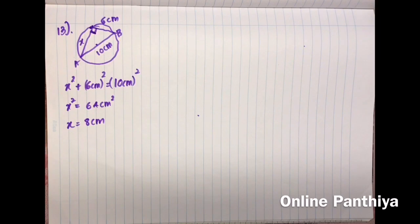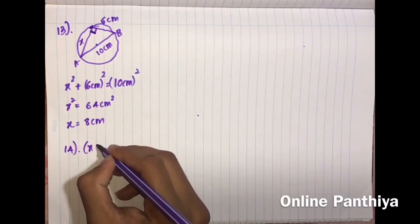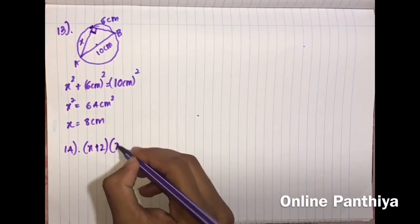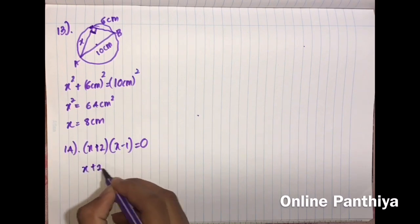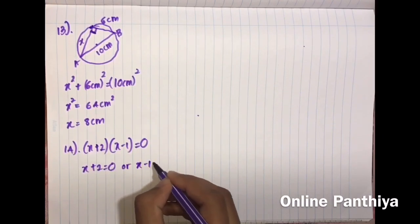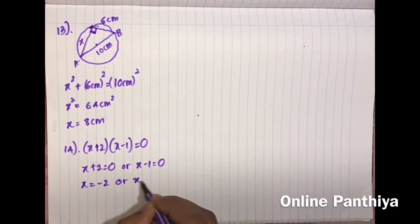Question 14: Solve (x + 2)(x − 1) = 0. Set each factor equal to zero: x + 2 = 0 gives x = −2, or x − 1 = 0 gives x = 1.